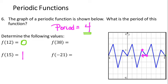For f(38), we want a number close to 38 that's divisible by 4 — that's 36. At X = 36, the function is at 0, at the beginning or end of a period. Since 38 is 2 units past 36, going 1 unit then 2 units past 36 puts us at X = 38, where the function value is negative 2.